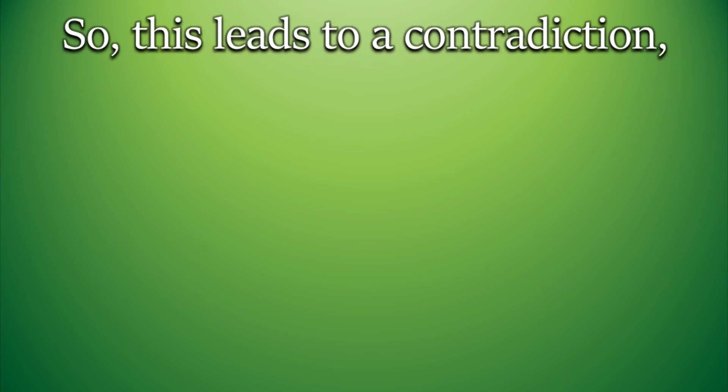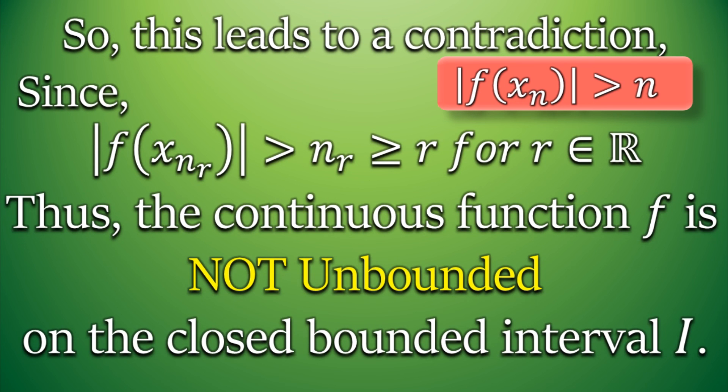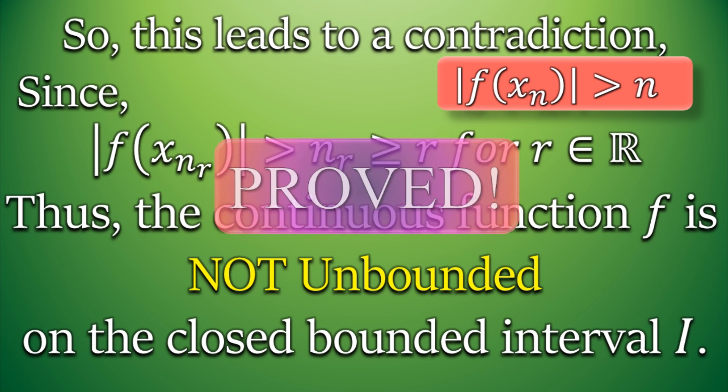But hey, this leads us to a contradiction. As we have assumed in the very start of the proof that the absolute value of all the images of f(xₙ) are greater than some real number n, so the absolute value of images of f(xₙᵣ) must be greater than some nᵣ or r for our convenience. But now as we have proved that f(xₙᵣ) is a bounded sequence, we have obtained that f is not unbounded on the closed bounded interval I. So that's it for the proof.